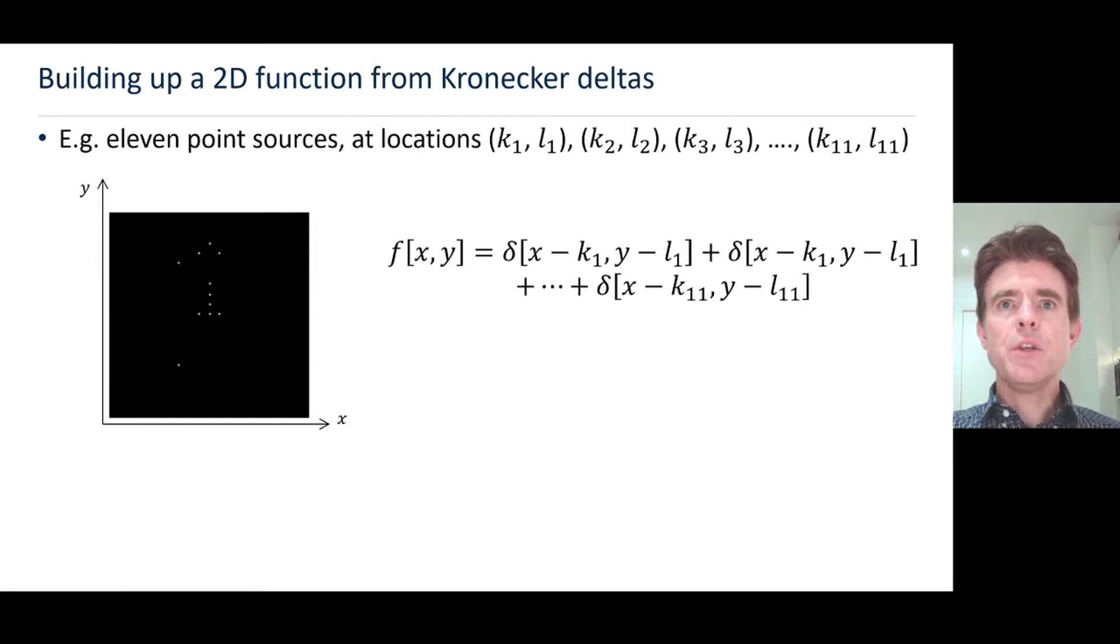Building up complexity a bit, now we could consider 11 point sources. Here I've got 11 point sources inside this example image, and we would just add these deltas together. Imagine the 11 point sources are located at k1, l1, so that's x equals k1, y equals l1, and then another one located at x equals k2, y equals l2, all the way up to k11, l11.